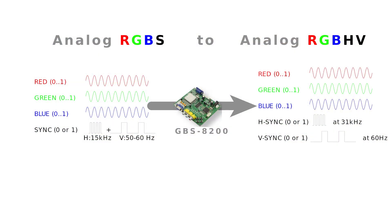As I explained previously, GBS 8200 can't handle any CGA or EGA signals. It expects an RGBS signal with analog color information and a composite sync signal with 15 kHz horizontal sync and 50 to 60 Hz vertical sync. This is not what CGA or EGA deliver, but I would like to show what can be done to make it work with the GBS 8200.